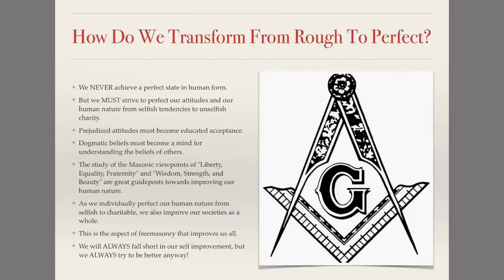As this movement starts, societies and communities become better. We become more capable of looking out for one another just because another person needs help, and for no other reason. We will cease to see other people's beliefs as a threat and more as something for us to learn and build upon in our own lives. This is the aspect of Freemasonry that improves us all. We will always fall short in our self-improvement, but we will always try to be better anyway — as Freemasons, or as somebody just learning about Masonic philosophy to make their life better, you must always try to be better and follow the path of self-improvement.